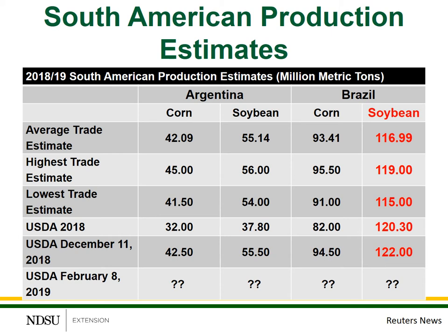This is a table of the pre-report estimates by private analysts for South American corn and soybean production for both Argentina and Brazil. The top row provides the average of all of the estimates by these private analysts. The second line is the highest that was reported in the survey, then the lowest estimate that was reported. Also shown are the USDA 2018 production figures for comparison, as well as the USDA report out of December — we didn't have a January report. Of course, we don't know what the February 8th report is going to tell us yet. I'd like to focus in a little bit on the far right-hand side, looking at Brazilian soybeans, as this will be one of those numbers that traders and analysts will focus on very quickly.